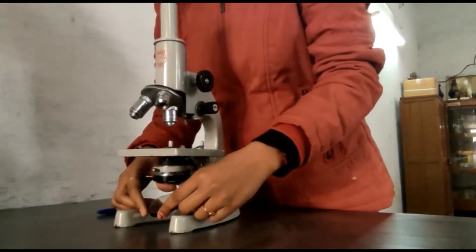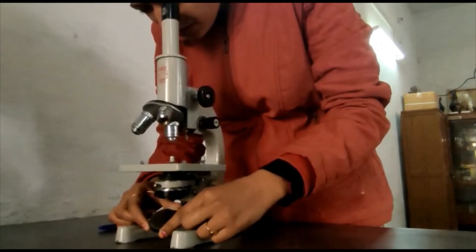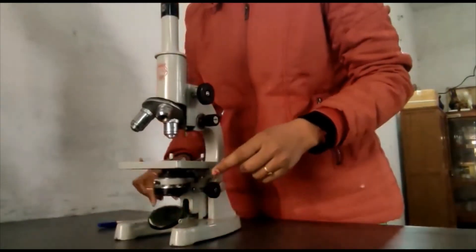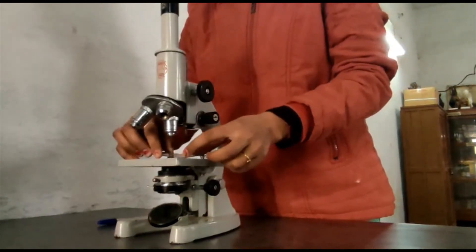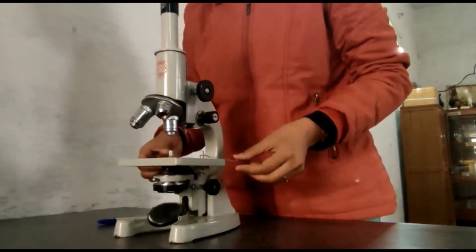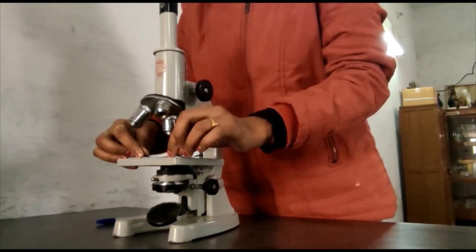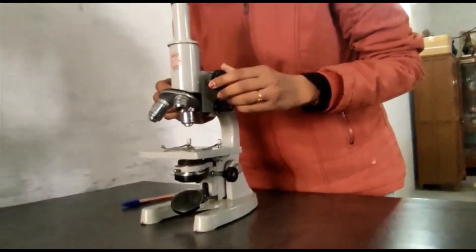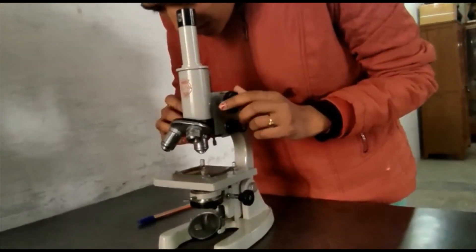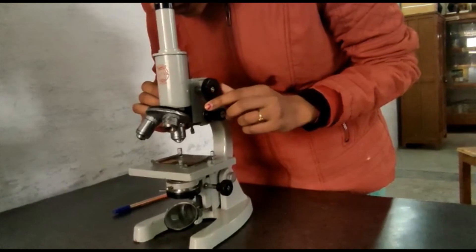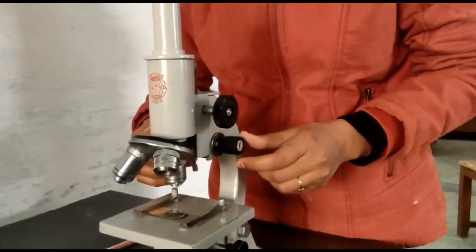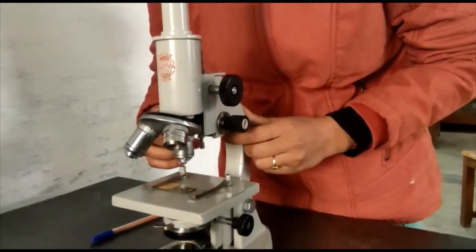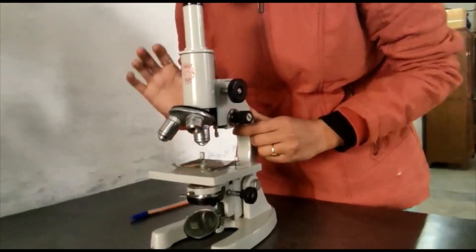Now I will show you the working of microscope. Firstly we will set the light with the help of mirror. Then we place the specimen on the stage and focus the slide with the coarse adjustment, and then with the fine adjustment we produce a sharp image of the specimen.